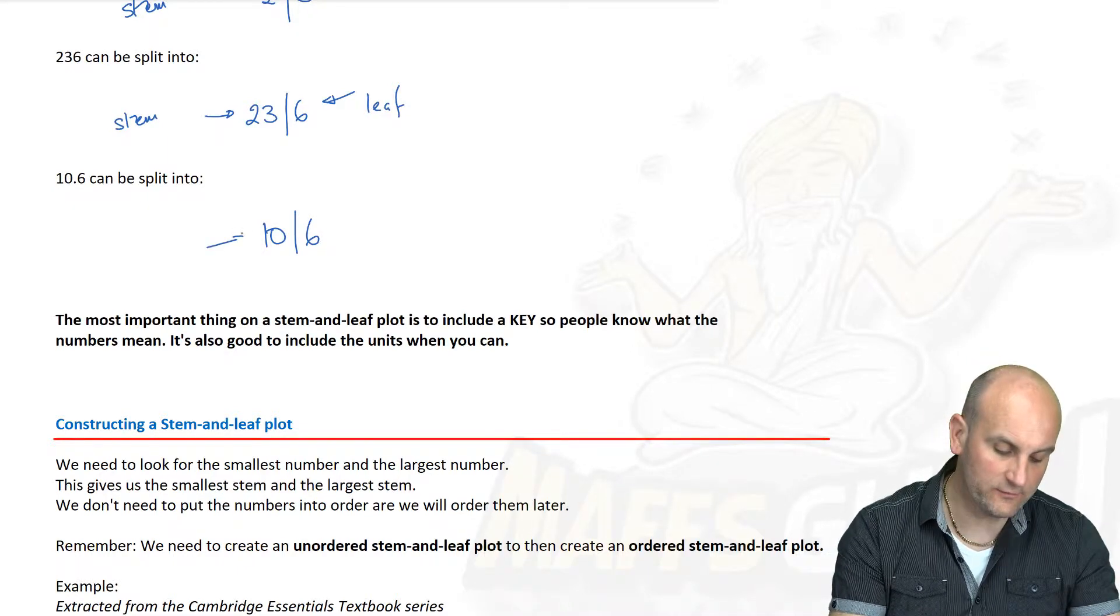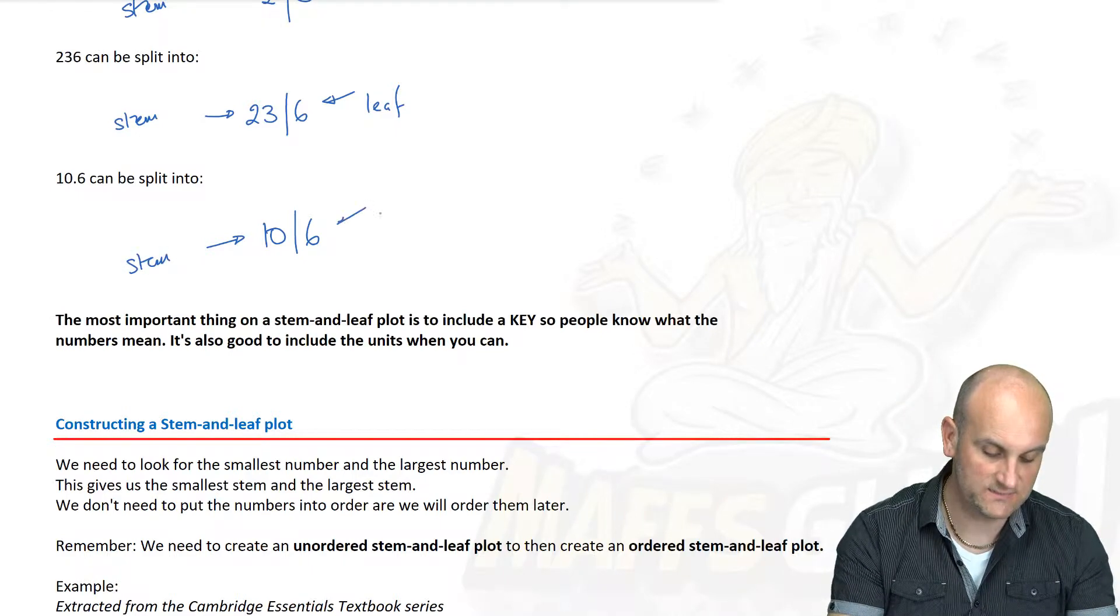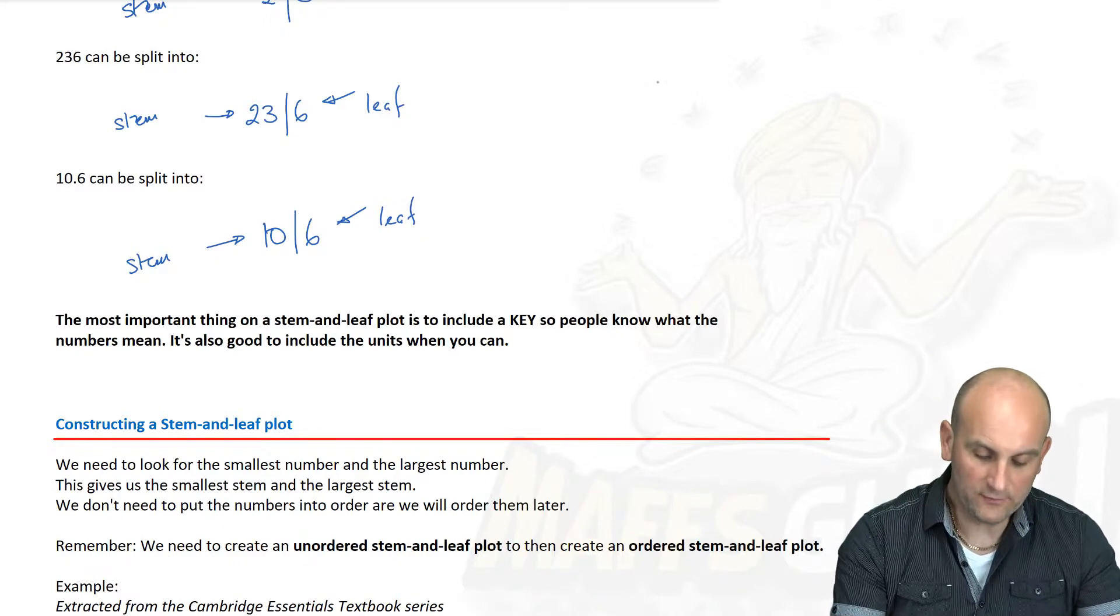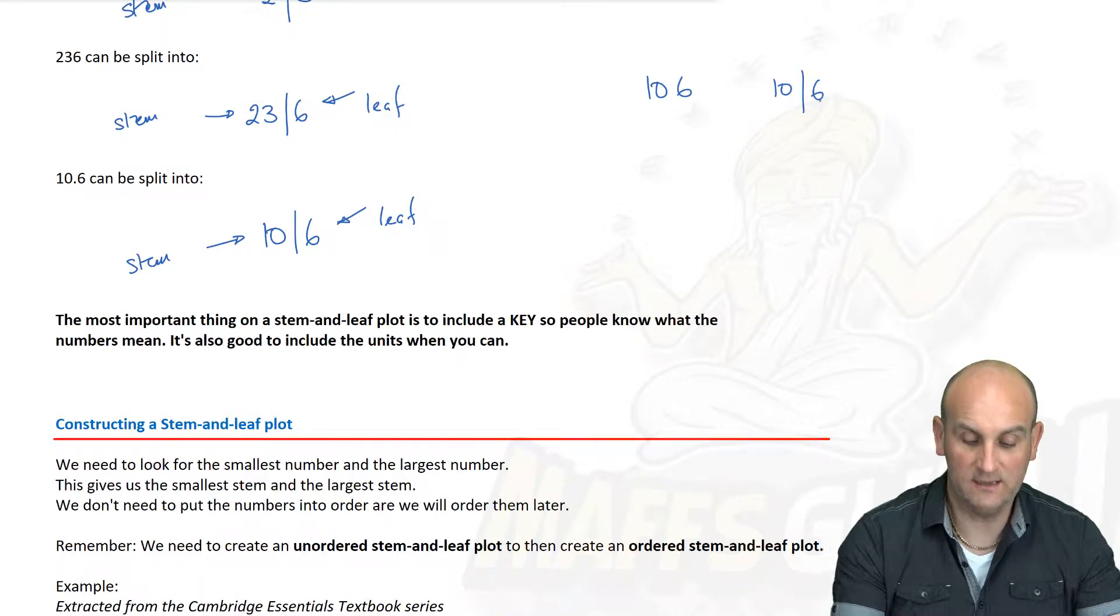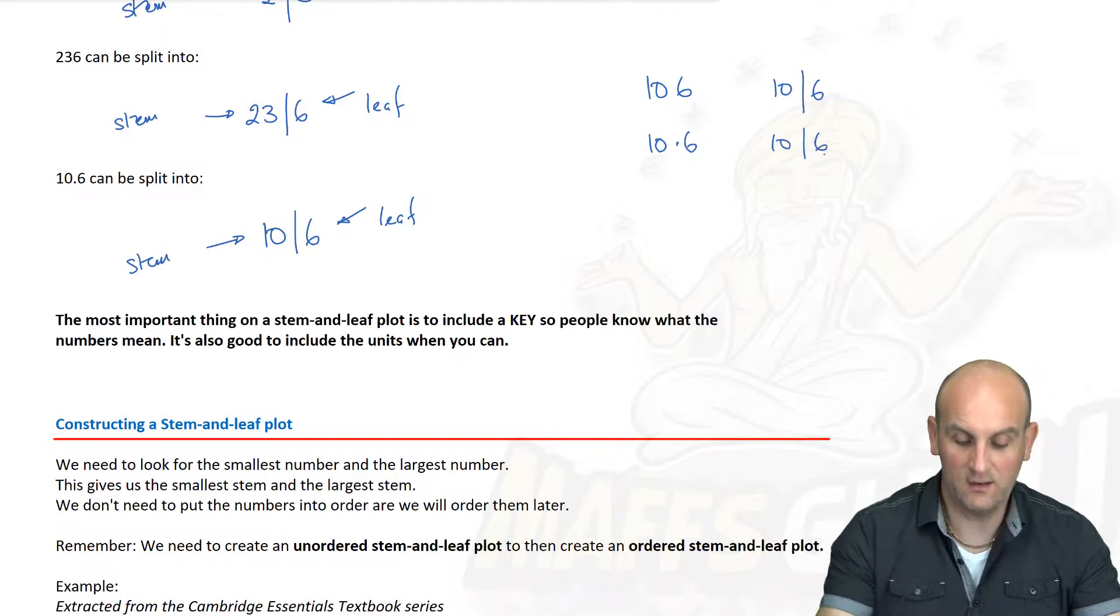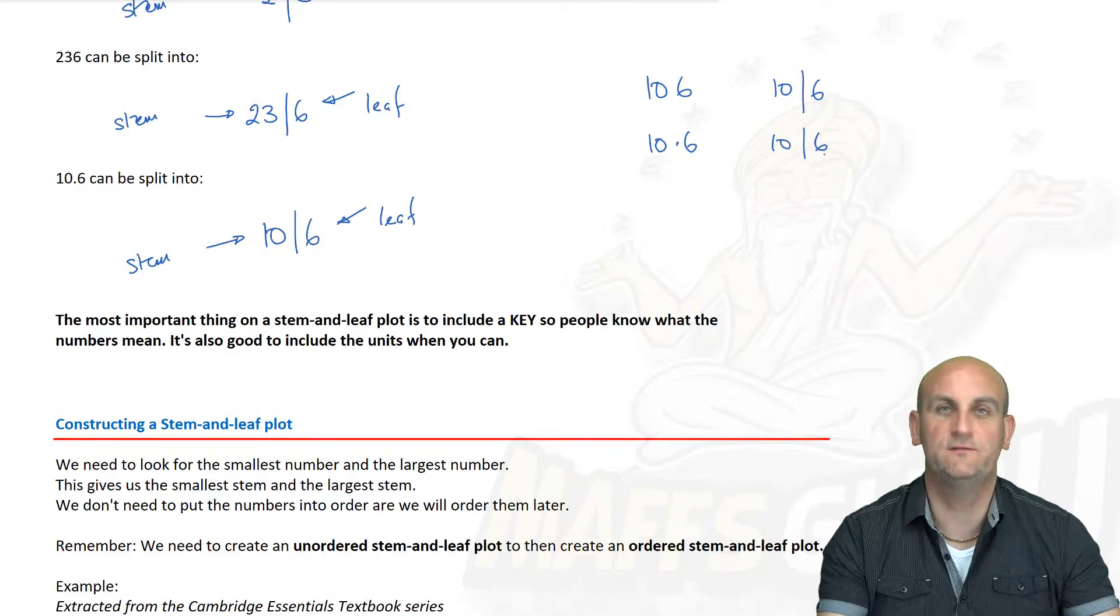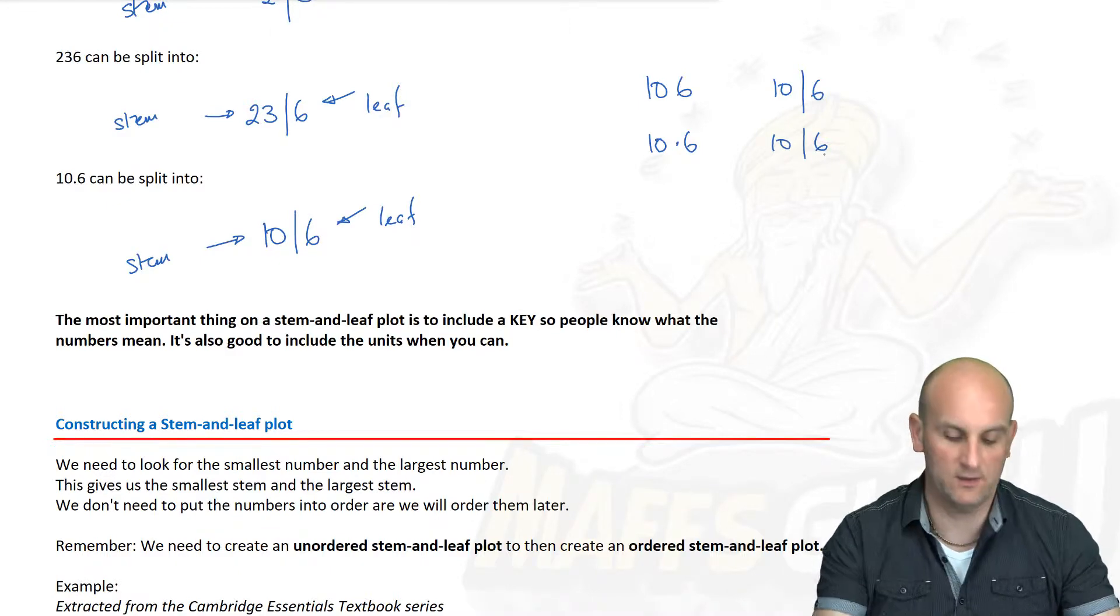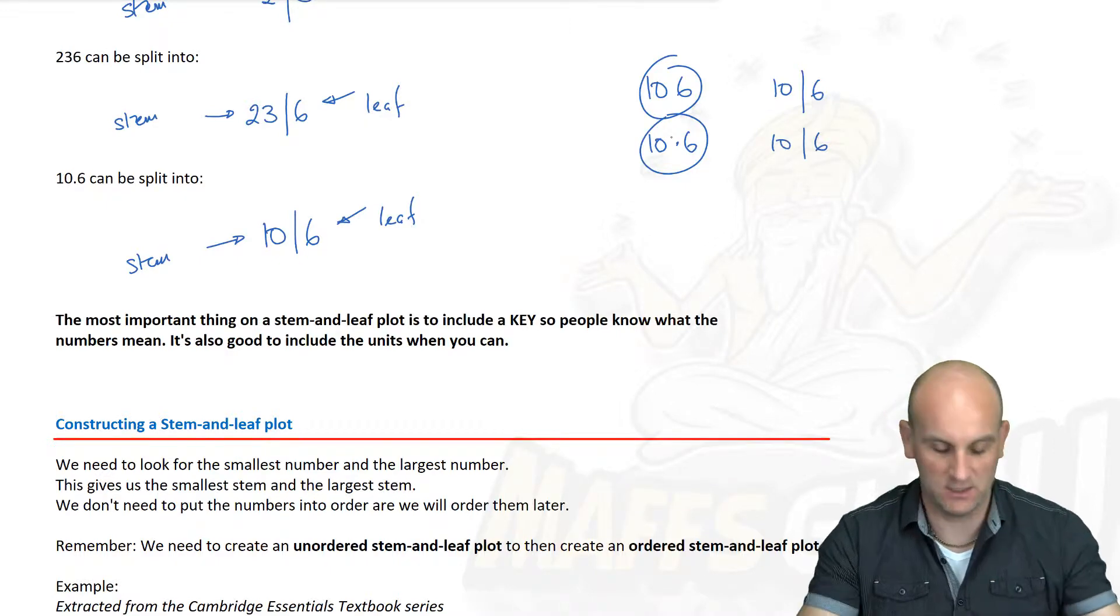10.6 can be split into 10 with a line and a 6. The 10 becomes my Stem, the 6 becomes my leaf. But we've lost the decimal point. Well how do you think the number 106 is written? Actually again 10 with a line and a 6. The most important part of a Stem and Leaf Diagram is its key, because that tells you whether the numbers we're dealing with are 106 or 10.6.